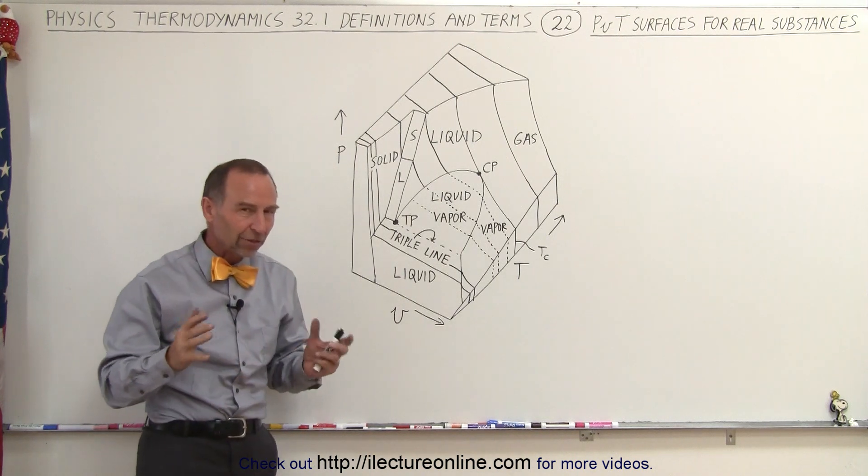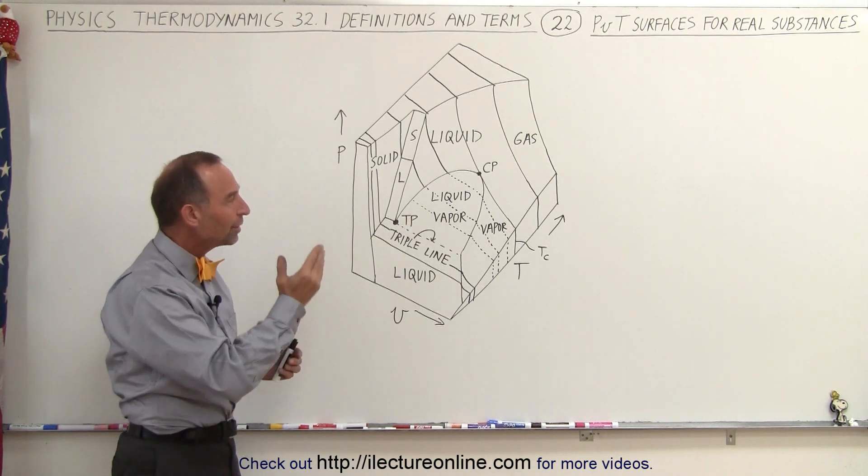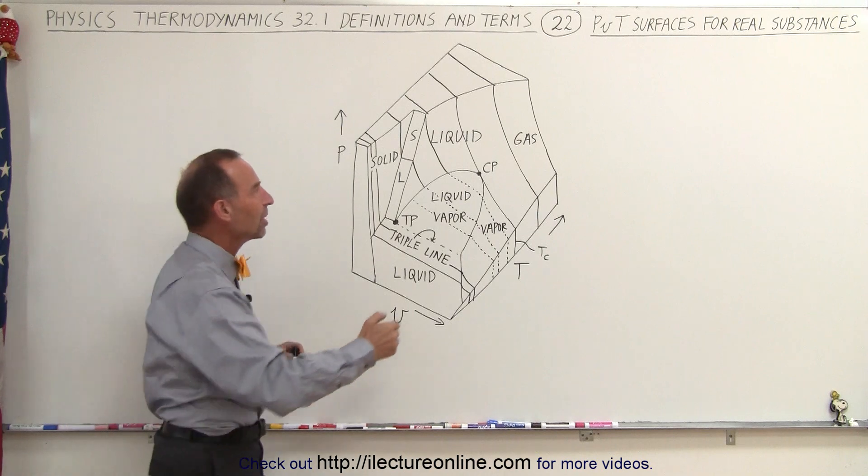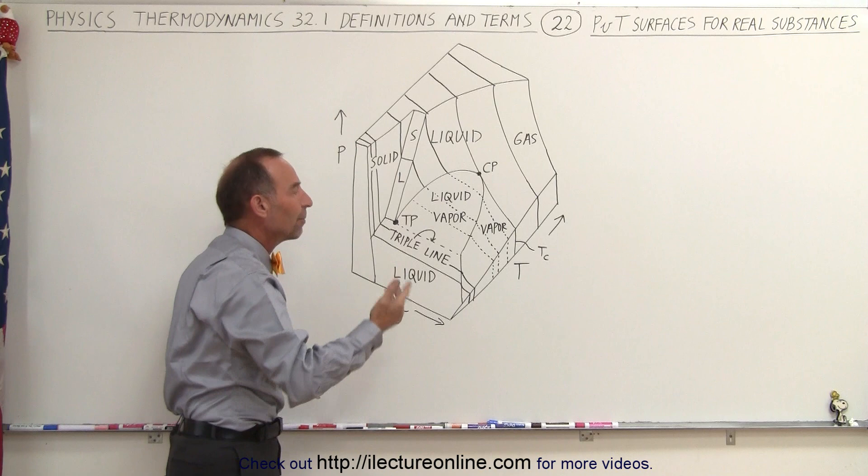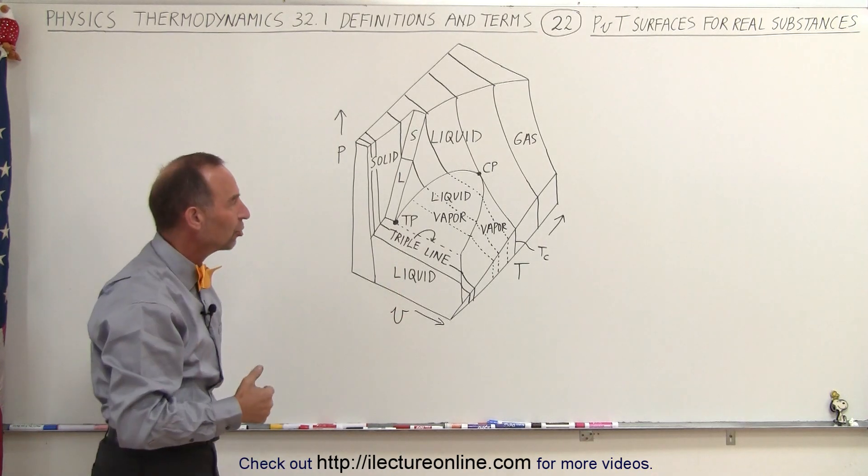Now the best way to think about this is to move along the isotherms. The lines that go across the graph represent a constant temperature as pressure and volume change.